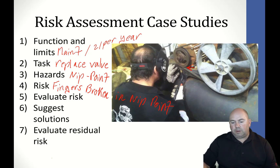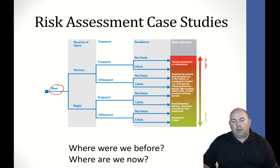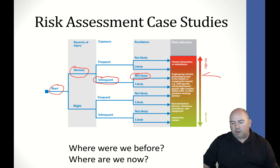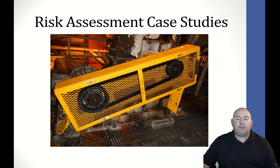The risk: fingers broken in a nip point. Let's evaluate this risk. Is that a serious or slight injury? Broken fingers — let's call that serious for the purpose of this exercise. Exposure: frequent or infrequent? This is a maintenance function, so that's going to be infrequent — we only do this maybe twice a year. Chance of avoidance: you've got to reach right in there beside it, so not likely. That puts us right in the medium-high range. The recommended solution is some type of engineering control — let's put guarding around those pulleys. This gets rid of that nip point hazard.